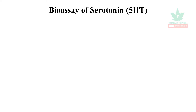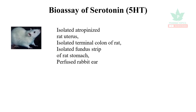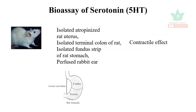Welcome to our Pharma Topics channel. Let us look at the bioassay of serotonin. The animal used frequently is the rat. The preparations used are isolated or atropinized rat uterus, colon of the rat, fundus strips of the rat which are very sensitive to serotonin, or rat stomach. Sometimes the perfused rabbit ear can also be used for bioassay of serotonin. In all these preparations, a contractile effect will be noted.